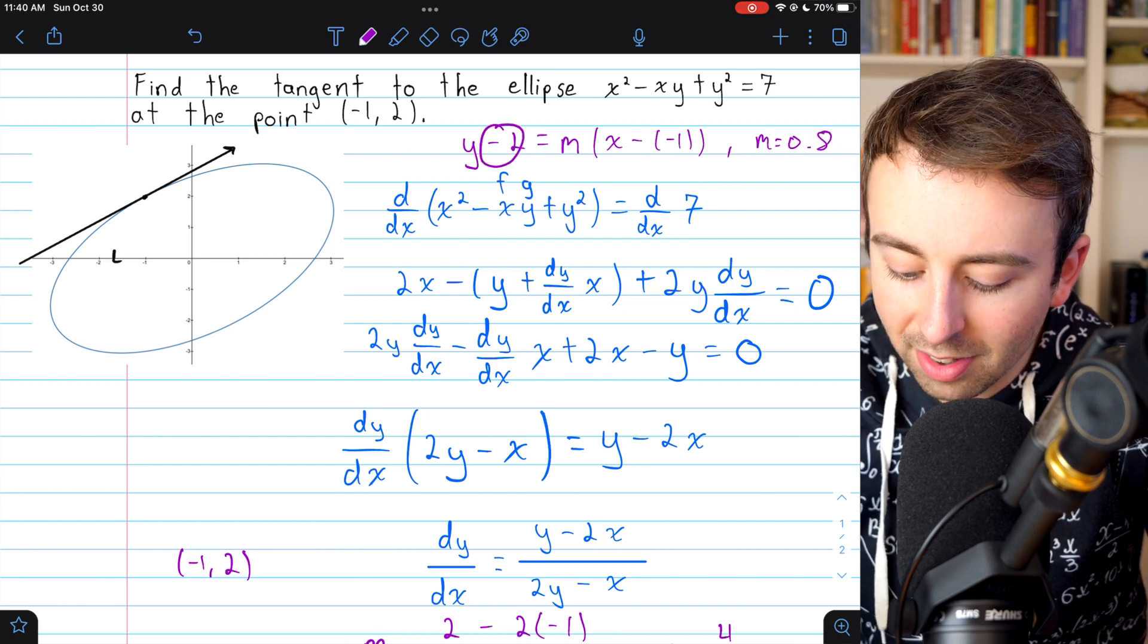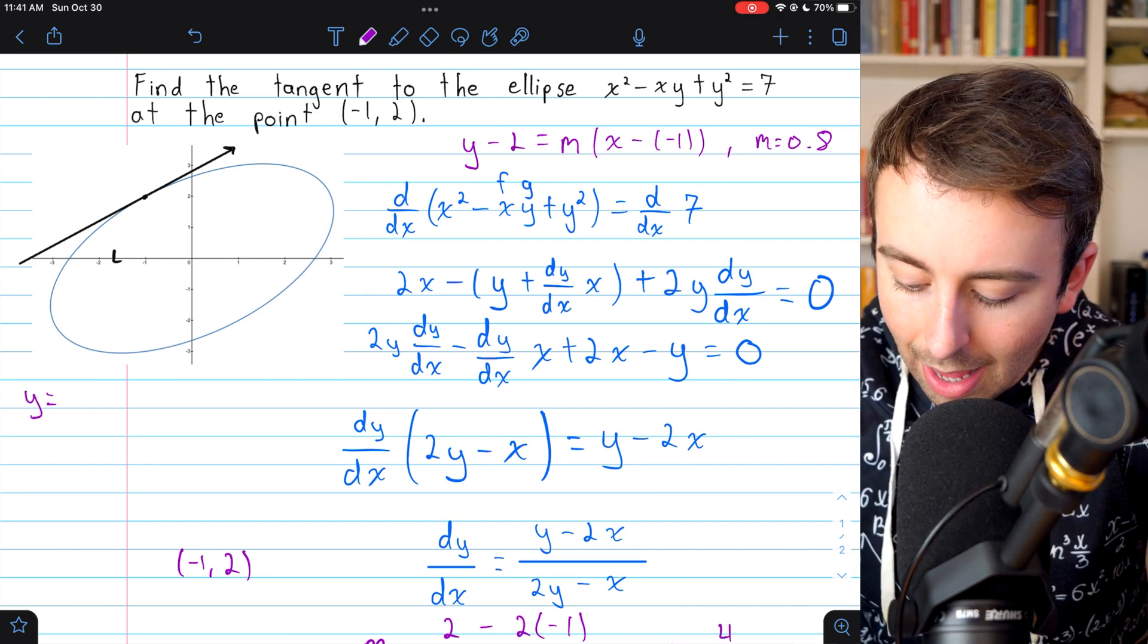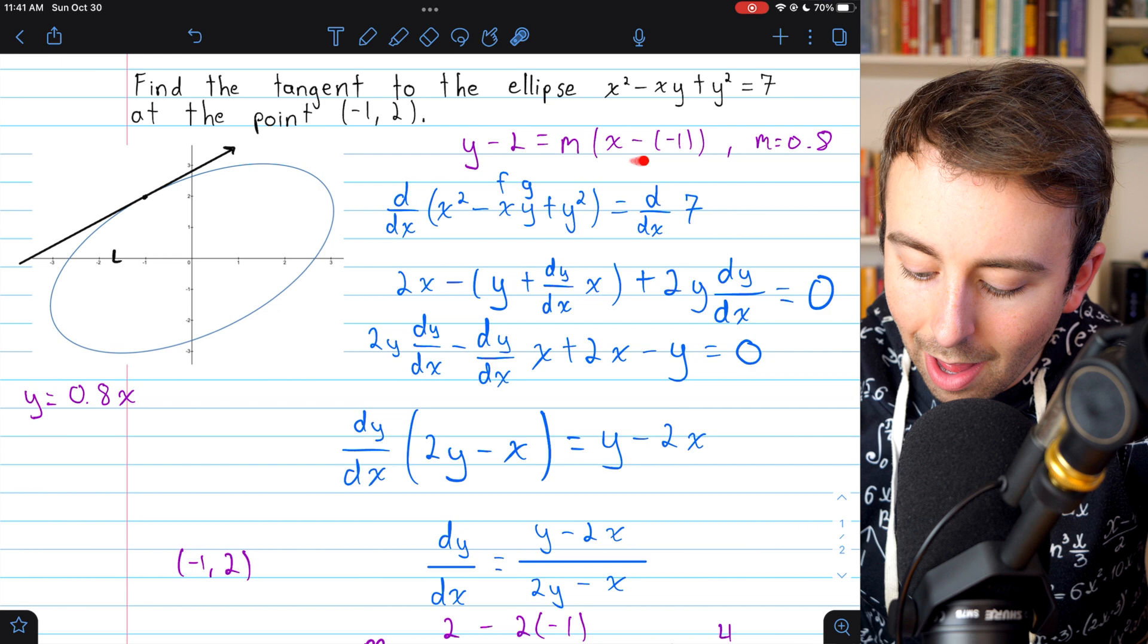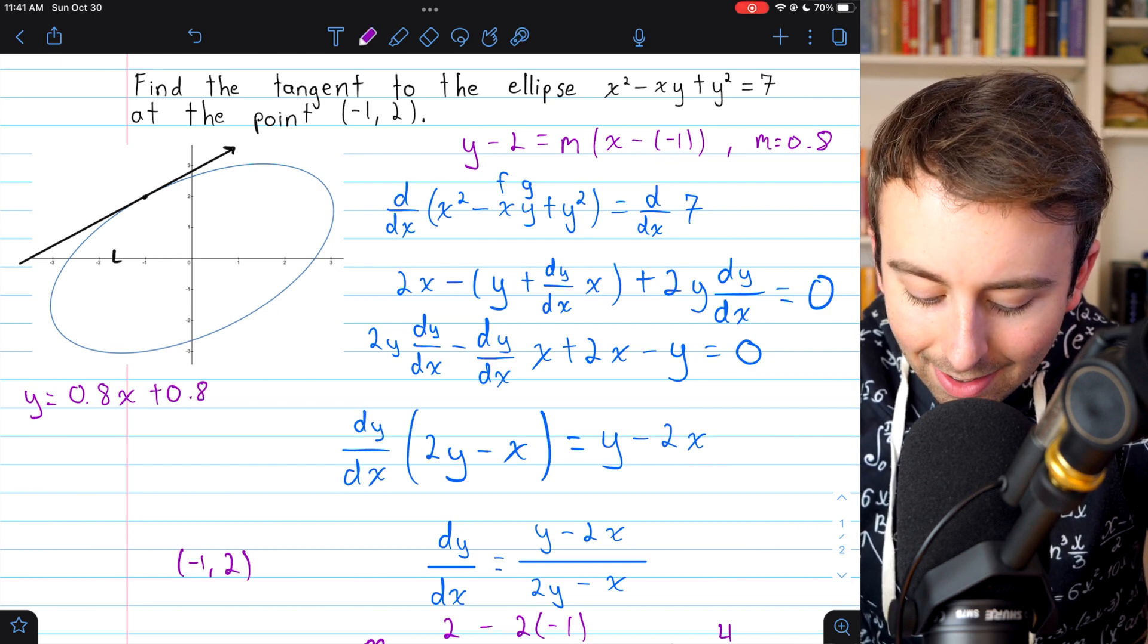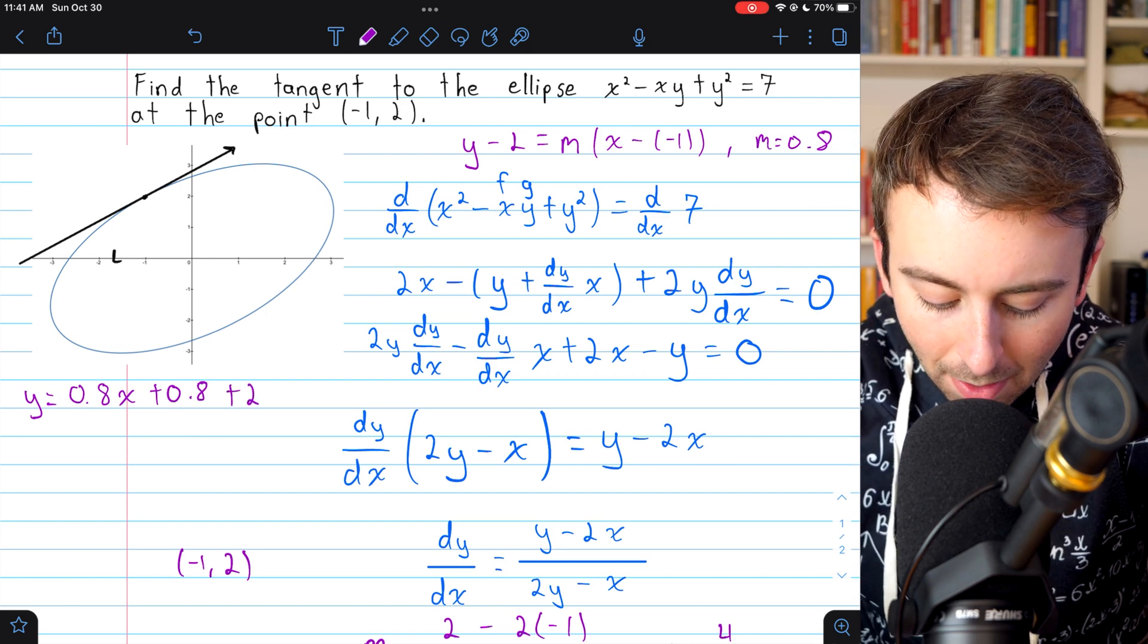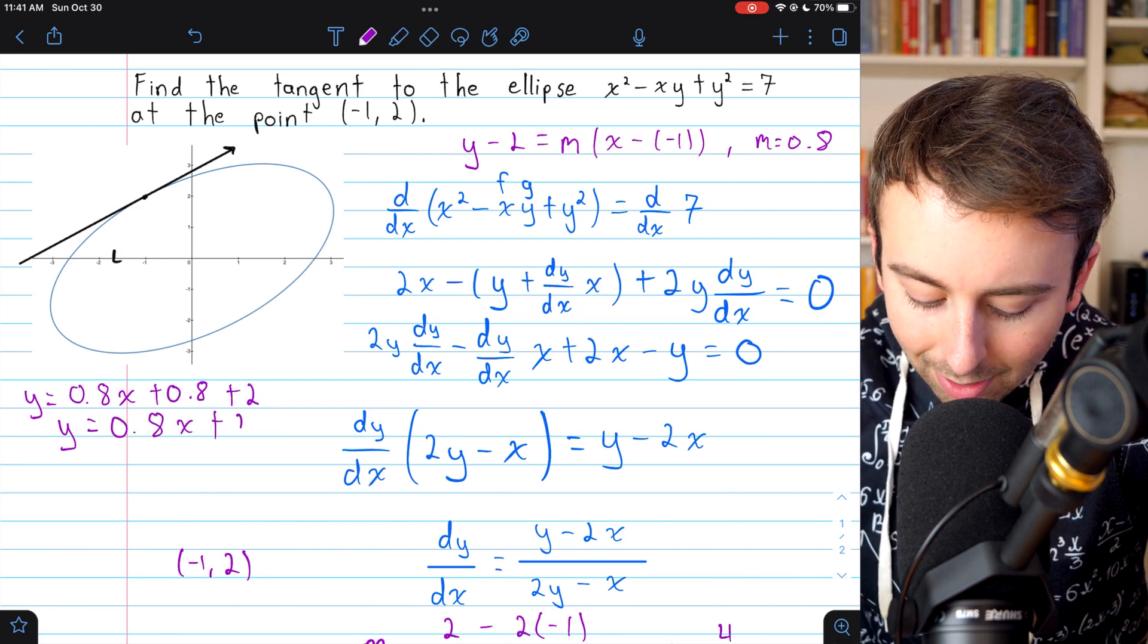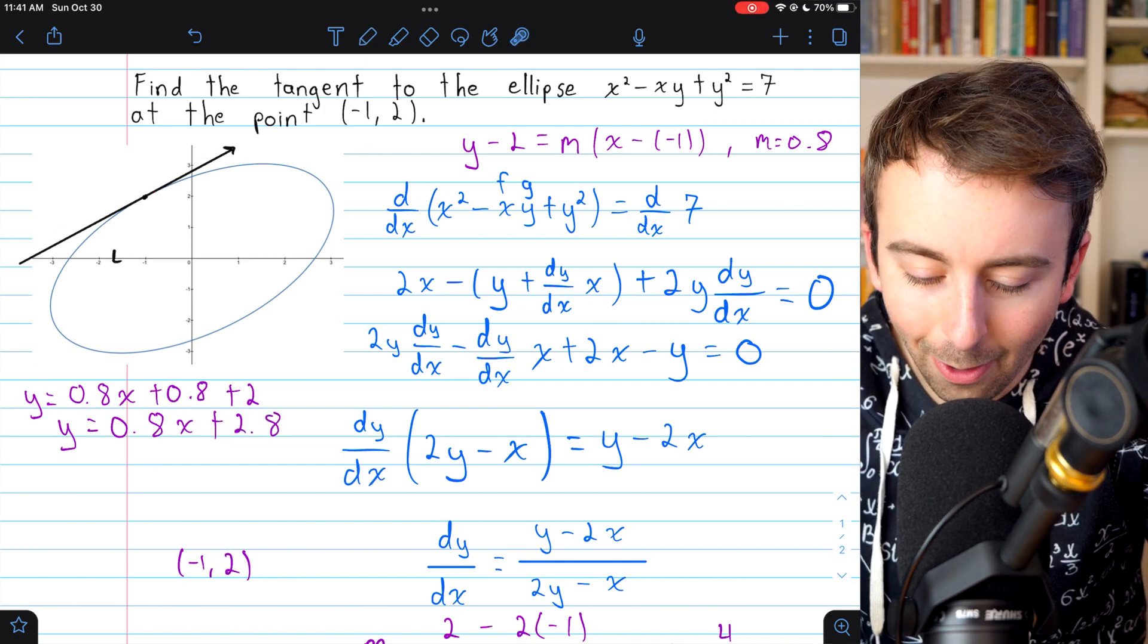Let's add 2 to both sides and distribute. That's going to give us y = m is 0.8, so we've got 0.8x. And then we would have m multiplied by positive 1, so that's going to be plus 0.8. And then we added 2 to both sides, so we've got to get that plus 2. And finally, the equation for our tangent line is y = 0.8x + 2.8, which agrees more or less with our sketch.